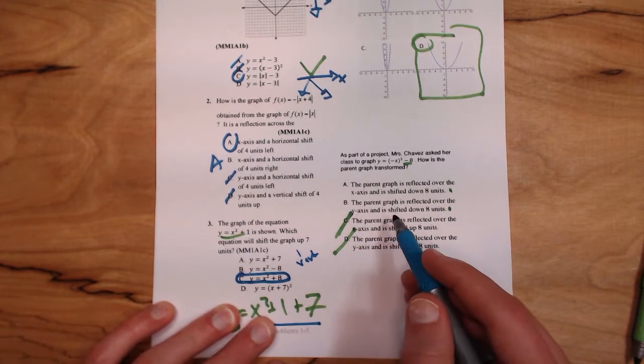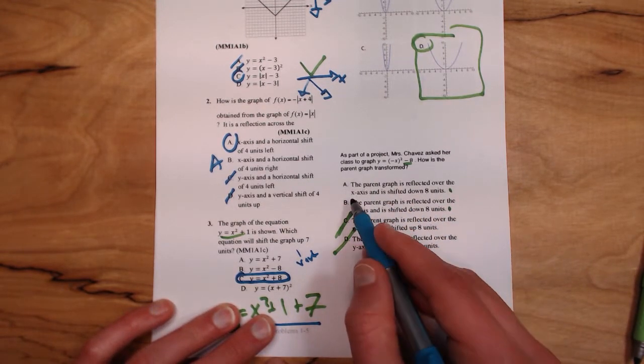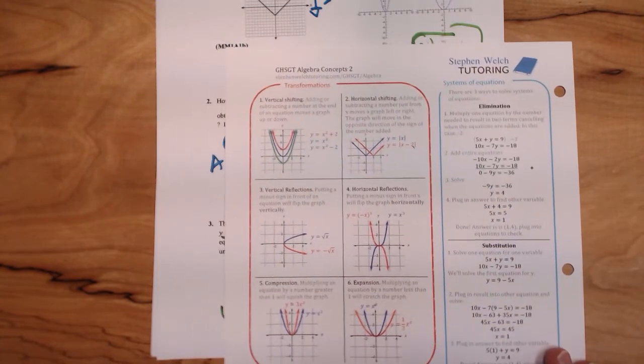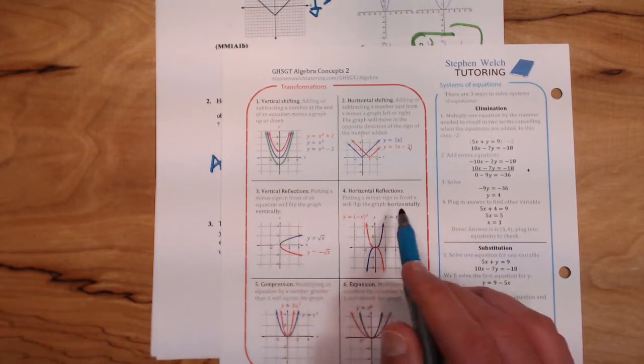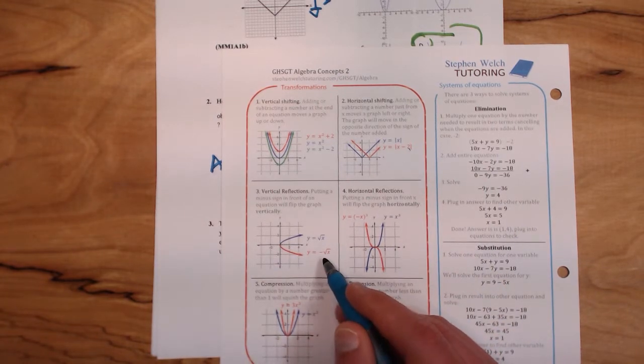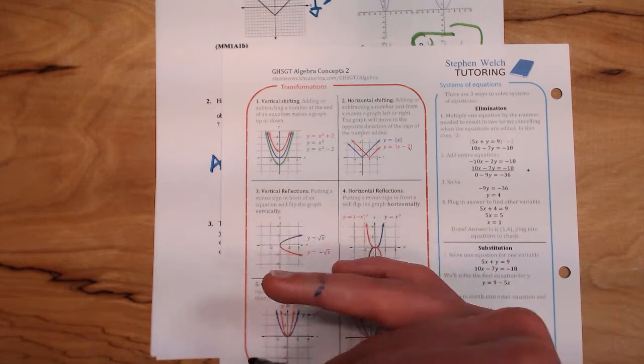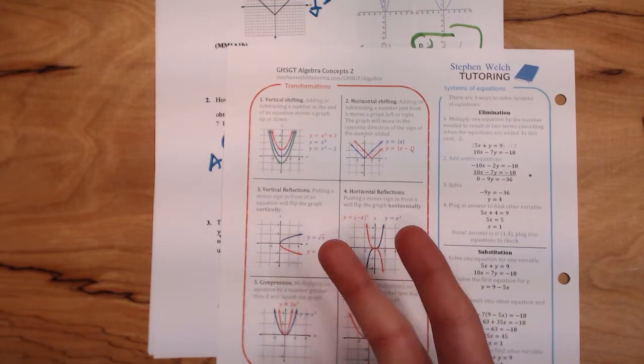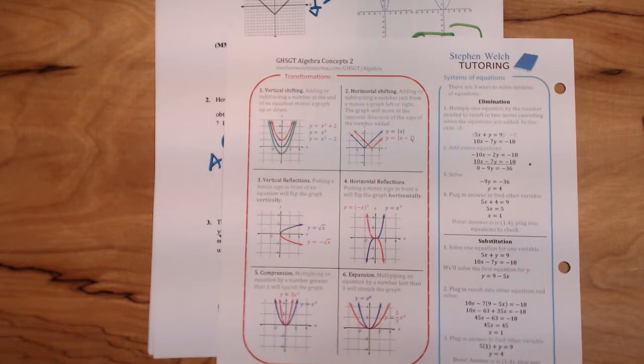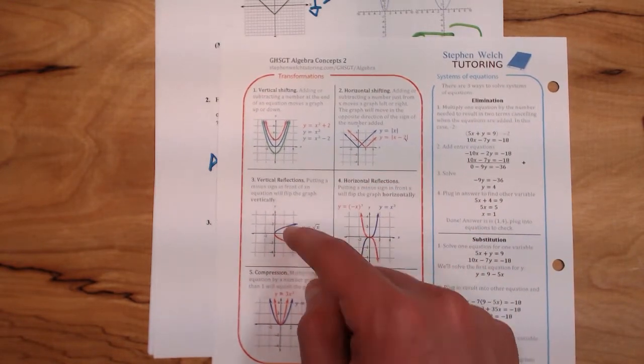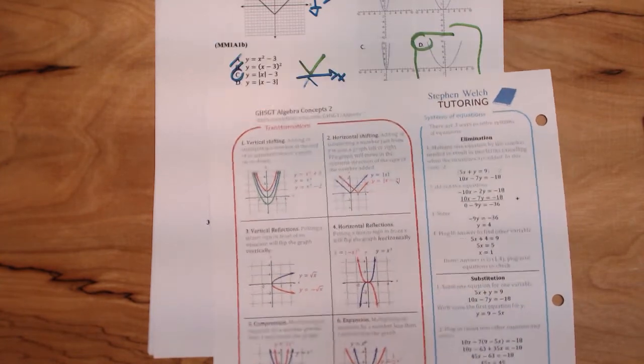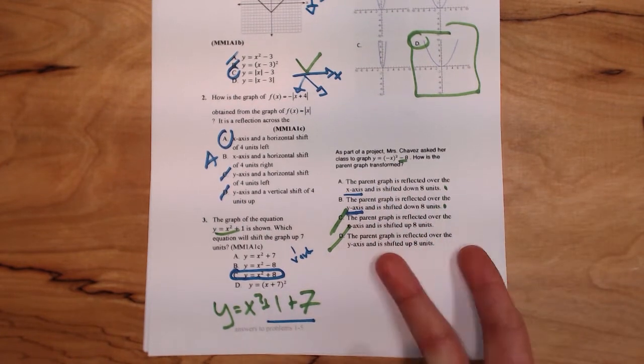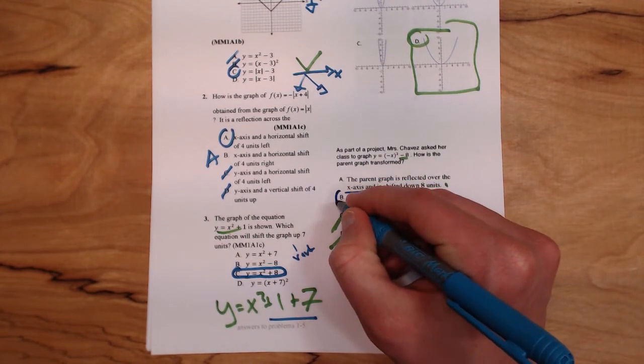Now we've got to figure out the rest of this. One option is that it's reflected over the x-axis, one option is that it's reflected over the y-axis. Back to our formula sheet. Notice in our reflection section here in the middle that a negative in front of the equation flips it vertically over the x-axis, and the negative inside the equation flips it horizontally across the y-axis. A negative sign in front flips it vertically over the x, a negative sign inside flips it horizontally over the y. We have a negative sign on the inside in this problem, so it must be shifted over the y-axis horizontally, so our answer has to be B.